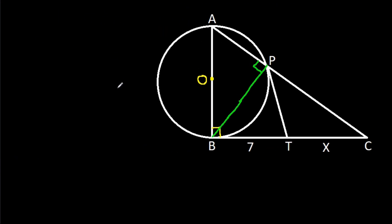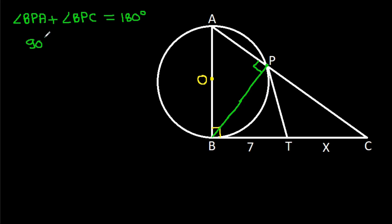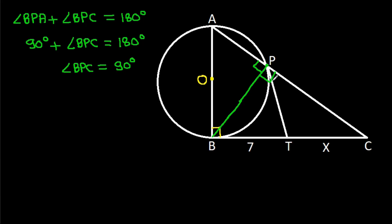Now, we have angle BPA is 90 degrees. At point P, angle BPA plus angle BPC will be 180 degrees. So angle BPC will be 90 degrees — this angle will be 90 degrees.